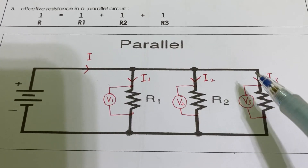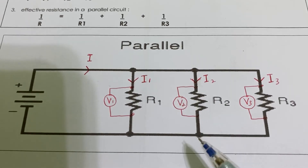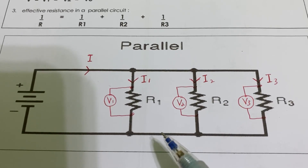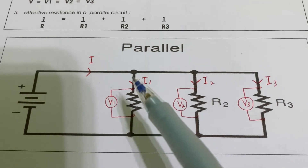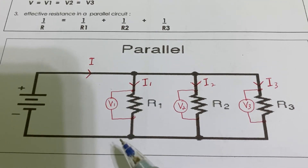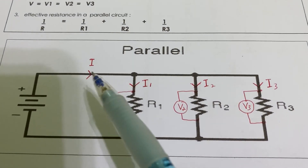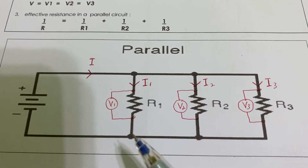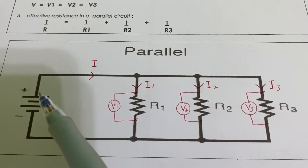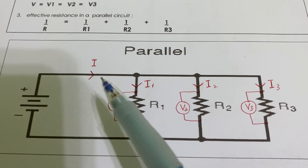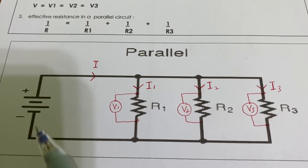So 6 ampere is divided: 2 here, 4 here, and 2 here. The 2 will combine with another 2 to form 4, and then the 4 combines with the remaining 2 to come back as 6. This is the path we call the effective resistance path. If here is 6 ampere, here also 6 ampere.